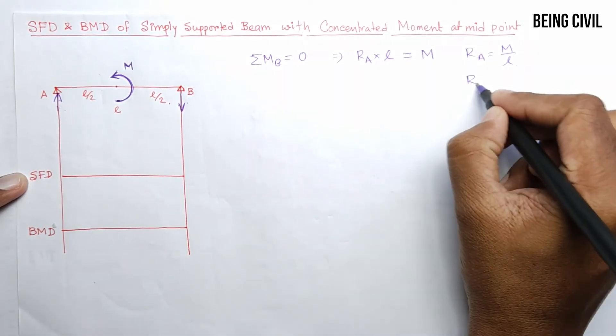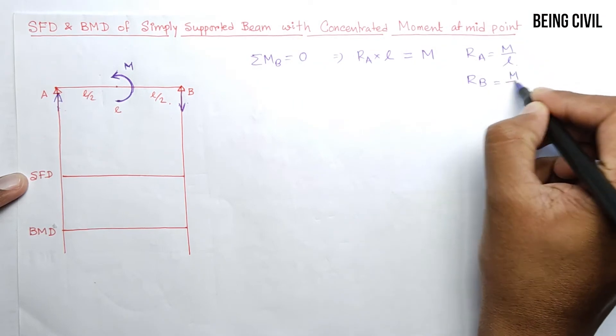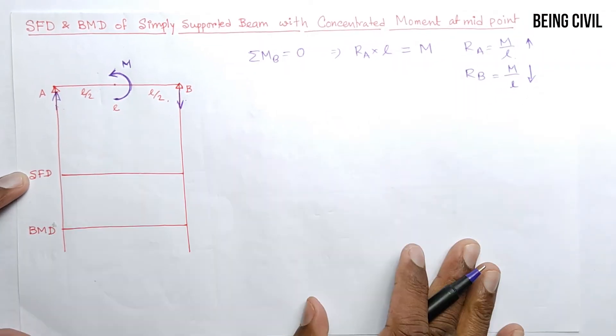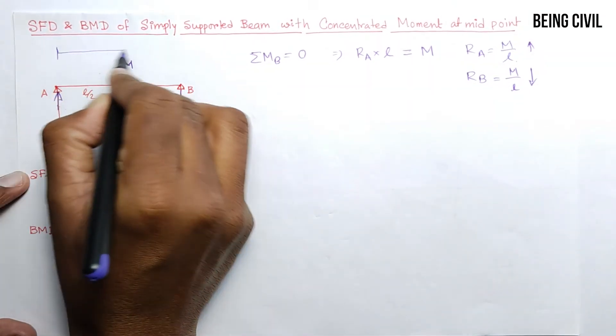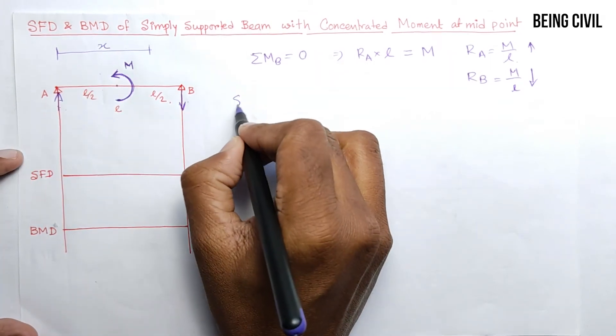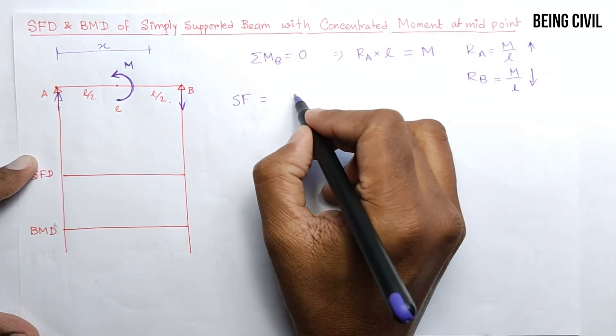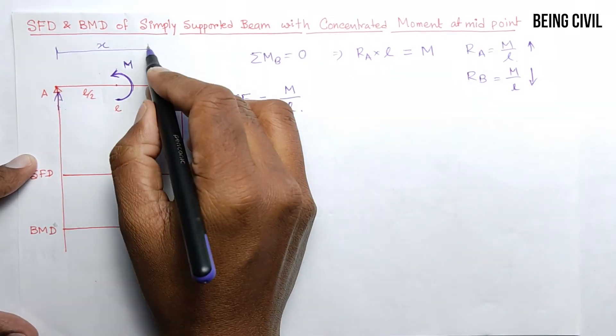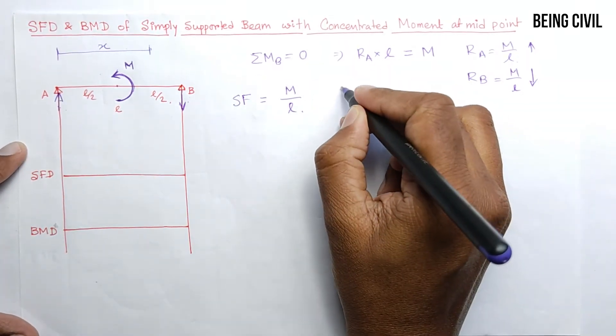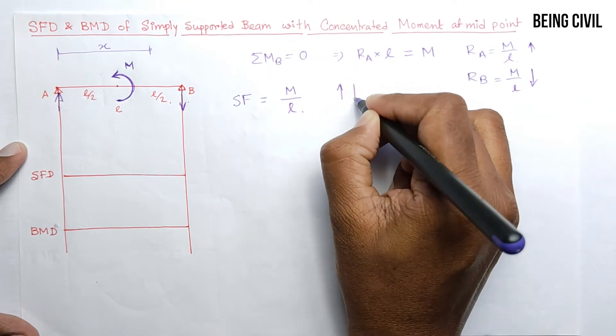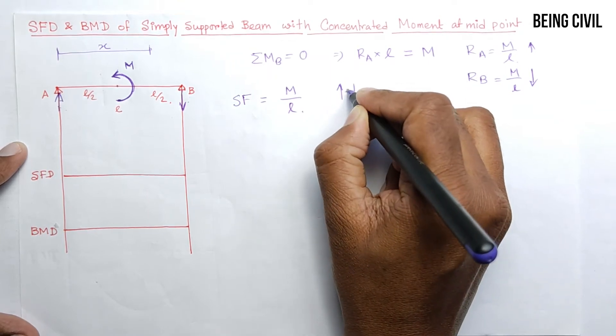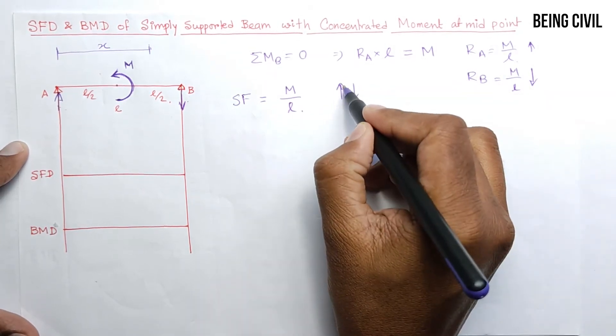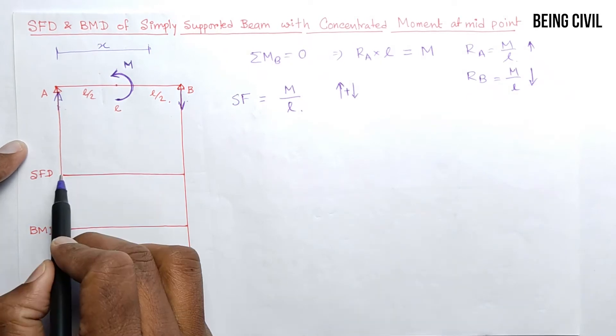Now take any section from this left-hand side X, and you get the shear force will be equal to M/L throughout the beam. At any section the direction is like this, so you know this sign convention - it is a positive shear force. The shear force diagram will be constant throughout the beam of value M/L. This is positive shear force.